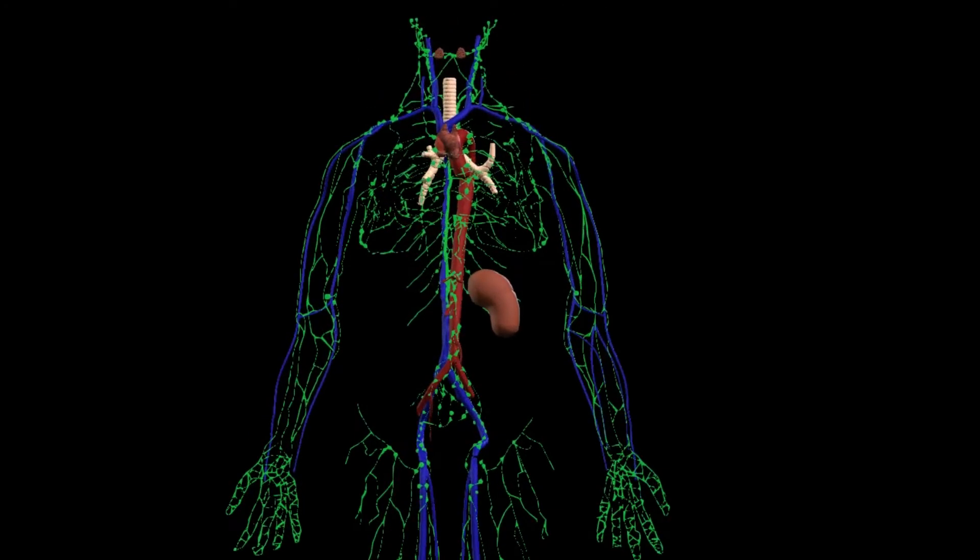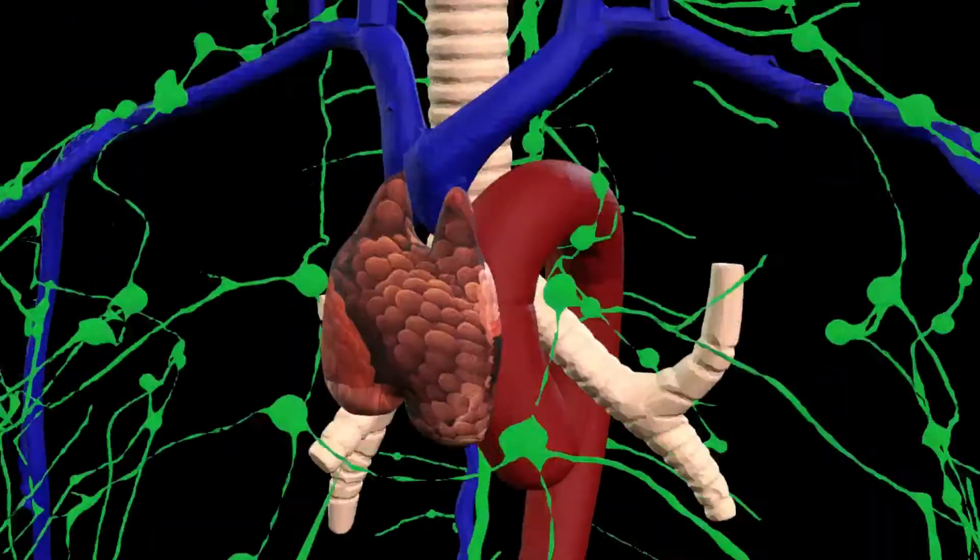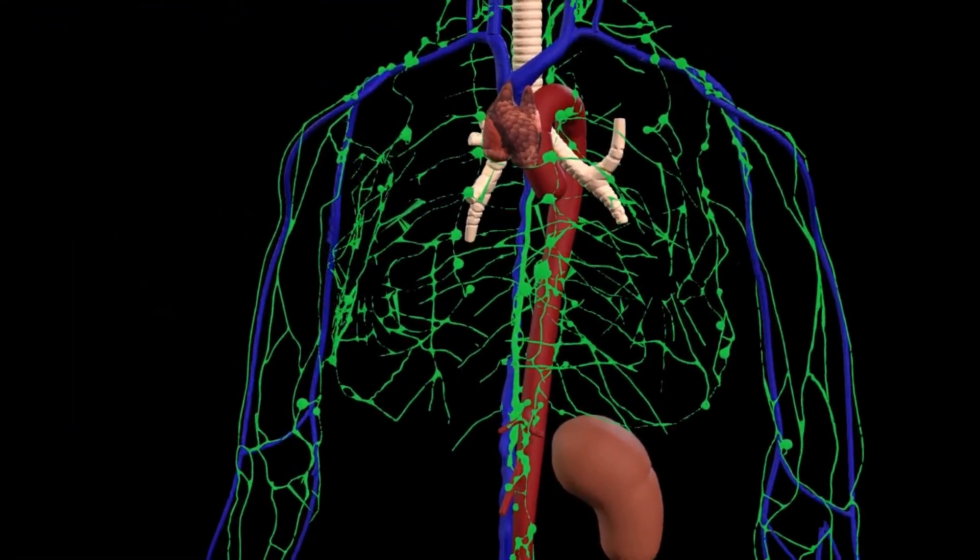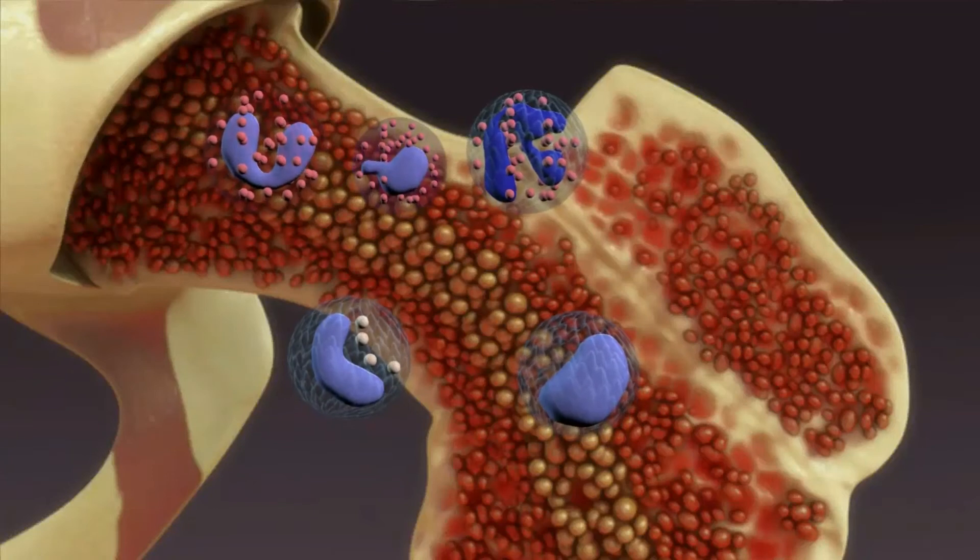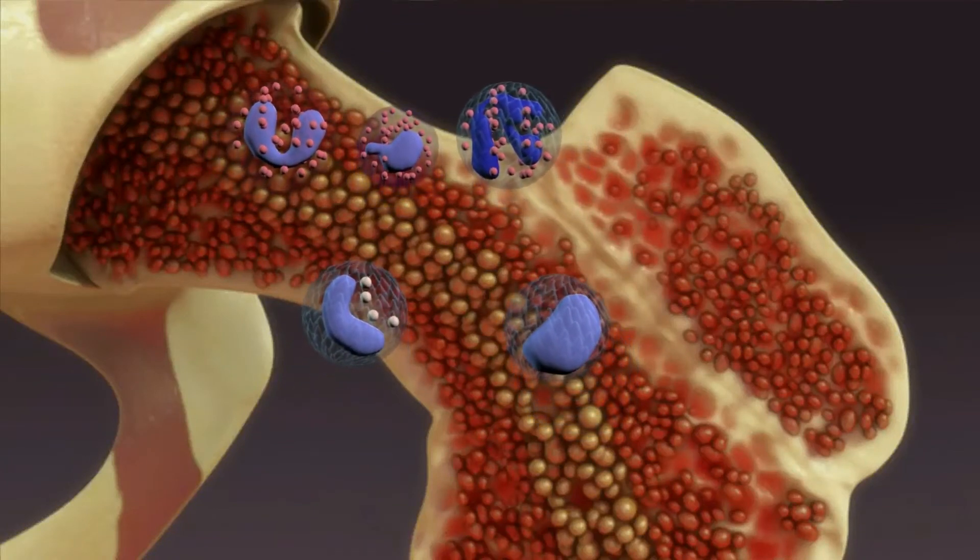The immune system includes white blood cells and organs and tissues of the lymph system, such as the thymus gland, spleen, tonsils, lymph nodes, lymph vessels, and bone marrow. White blood cells are produced inside the bone marrow. Stem cells in the bone marrow differentiate into different types of white blood cells.